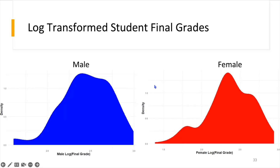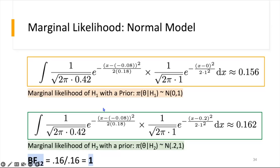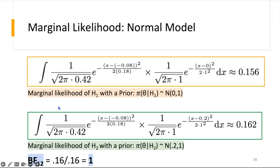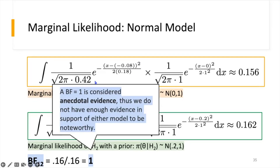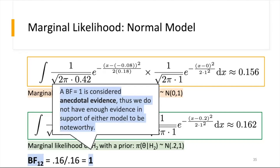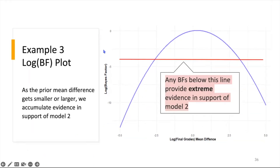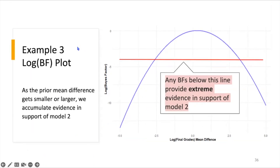Computing the marginal likelihoods and taking their ratio gives a Bayes factor B₁₂ of approximately 1, which is considered anecdotal evidence. Thus, we do not have sufficient evidence to support either model. Plotting the log Bayes factor against varying prior mean differences, anything below the red threshold line represents extreme evidence for model 2. We don't accumulate strong support for model 1 overall, but as the prior mean difference grows larger or smaller, evidence accumulates for one model or the other.